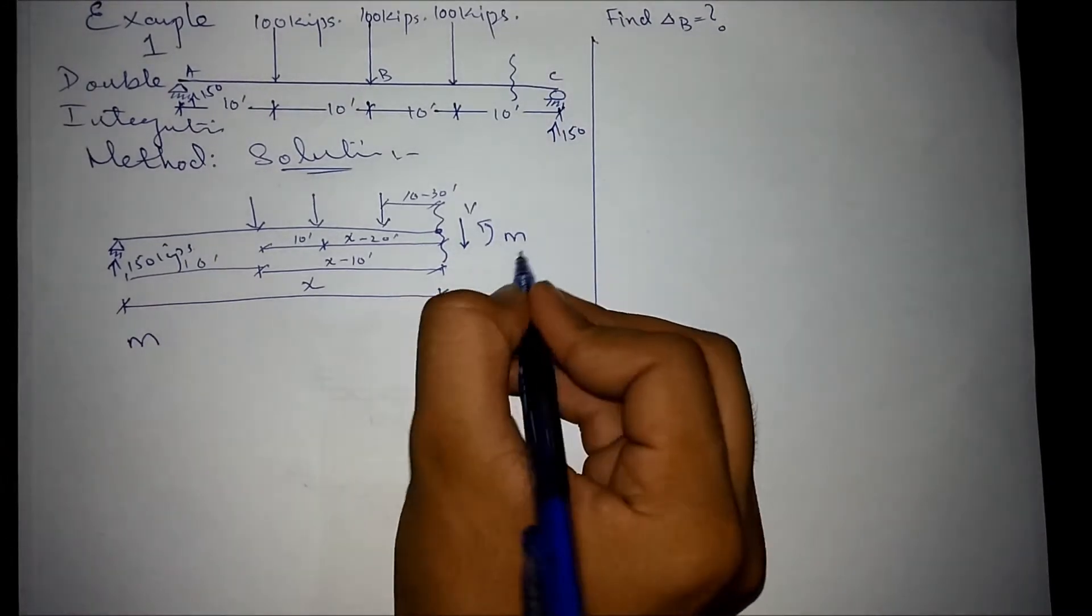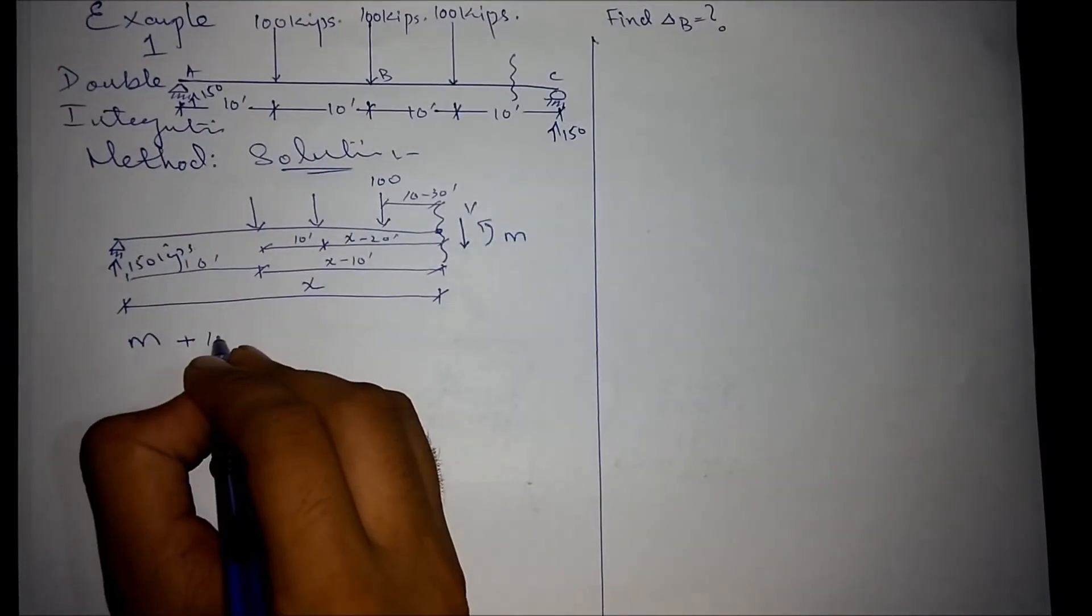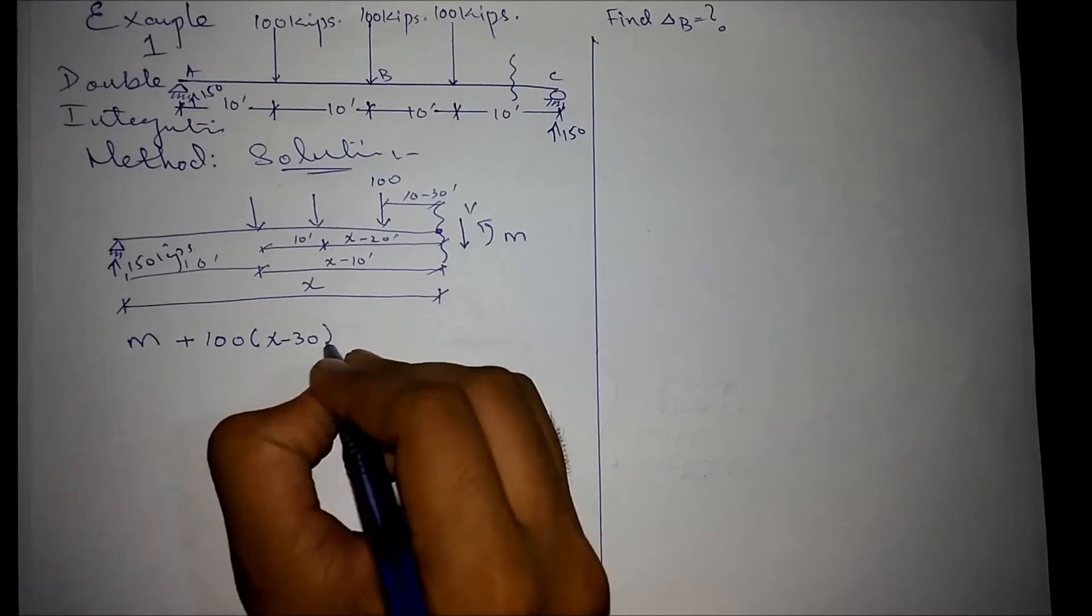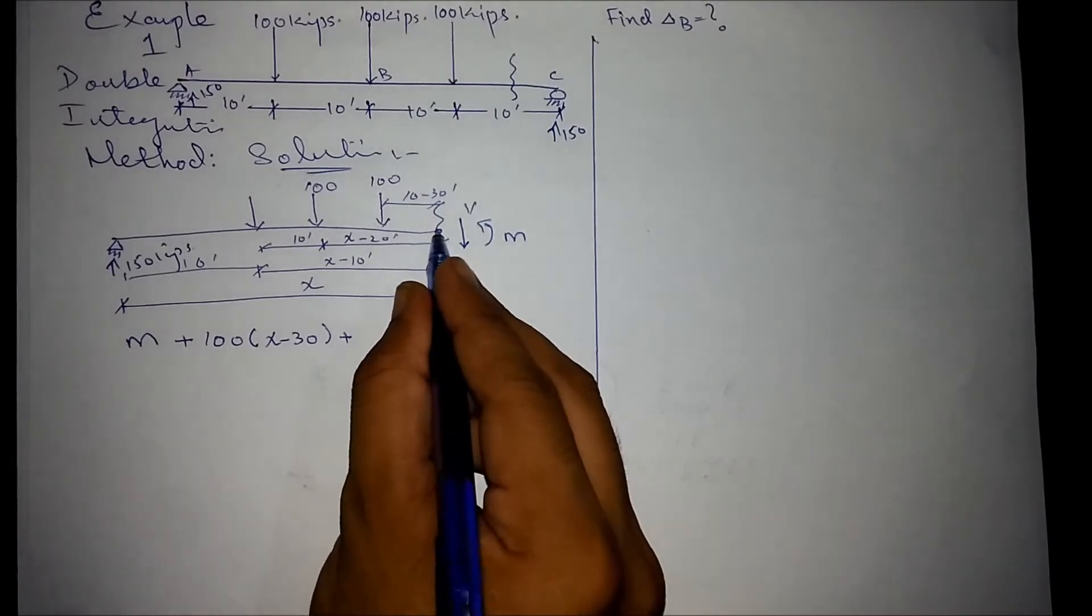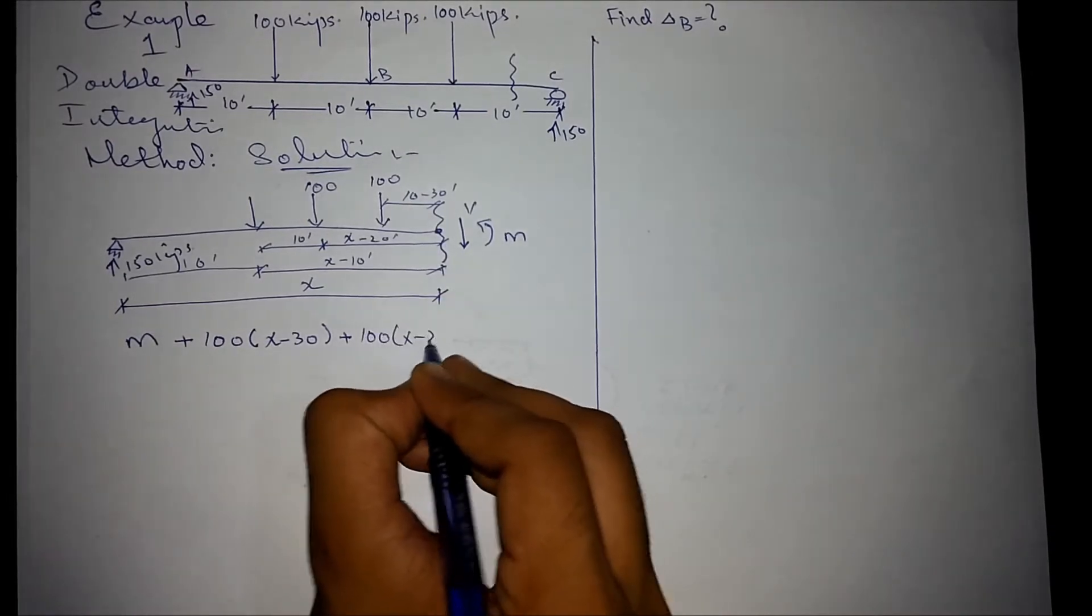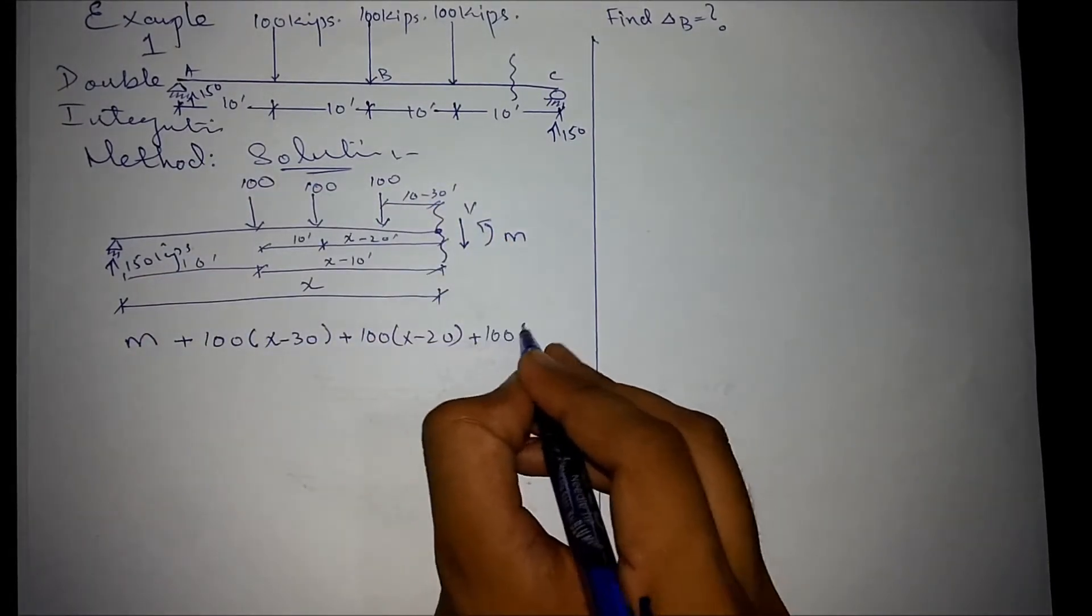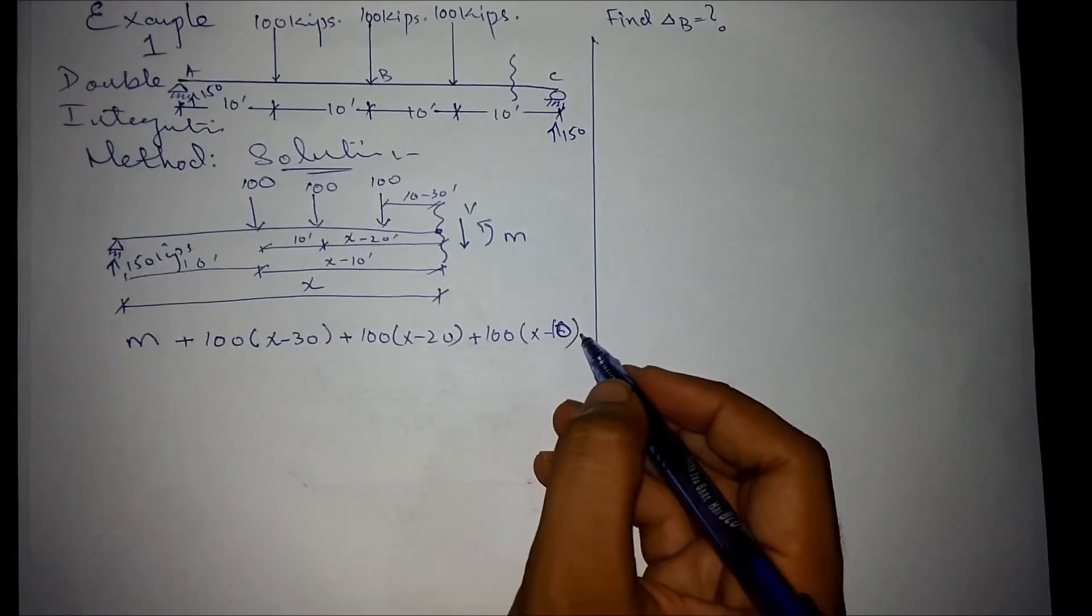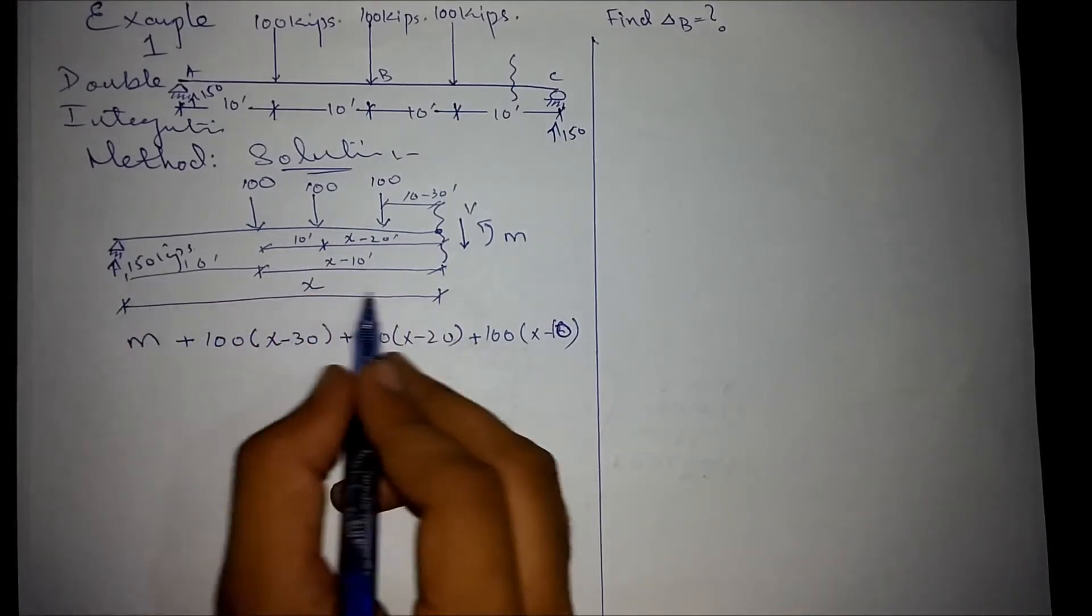The moment is rotating anticlockwise. The first hundred kips force is also rotating in anticlockwise direction, so it would be having a momentum of x minus 30 feet. And the second load, again rotating in anticlockwise direction about this point, x minus 20. And the third load, again rotating in anticlockwise direction.